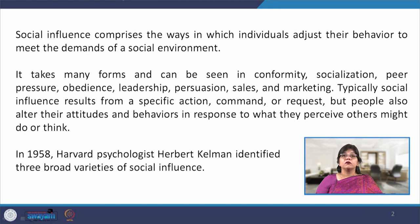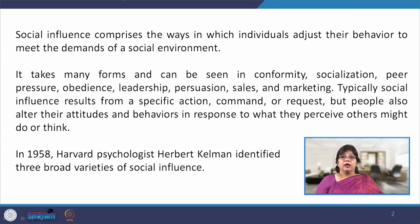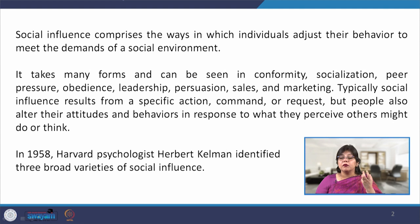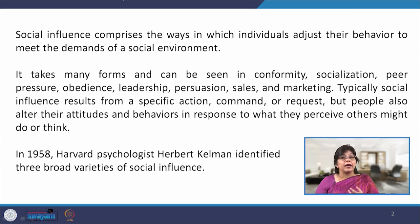All these patterns of behavior involve a process of social influence. Typically, social influence results from a specific action, command, or request — such as aligning with group norms or receiving a command from a leader. It can be a request in terms of compliance. But people also alter attitudes and behaviors in response to what they perceive others might do or think. For instance, a celebrity who endorses a product alters the behavior of customers — they are influenced, impressed, and affected by those endorsements. This is how social influence takes place in our day-to-day life.